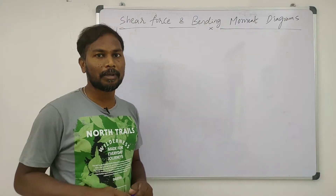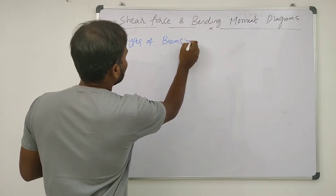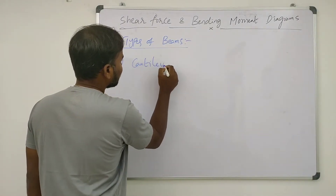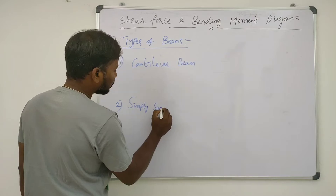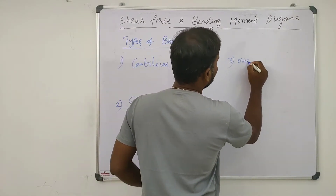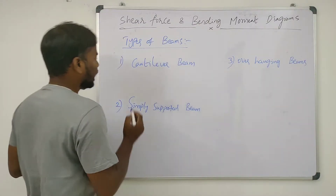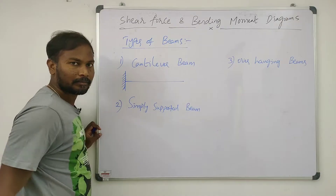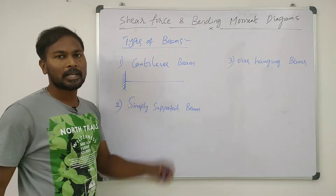First let us discuss about types of beams. Majorly we will come across three types of beams. One is cantilever beam. Second is simply supported beam. And third one is overhanging beam. A cantilever beam has one fixed end — it may be at left side or right side — and the other end is free.